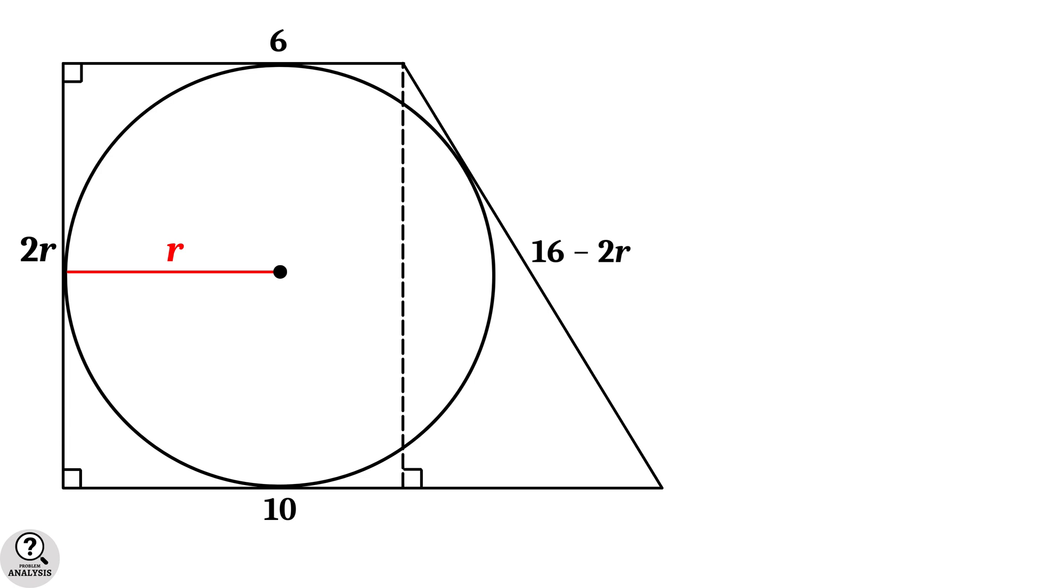Now draw this height to form a right triangle here. So, its height will be 2r and base length will be 10 minus 6 equal to 4 units. Now apply Pythagoras theorem.